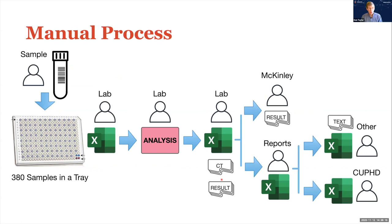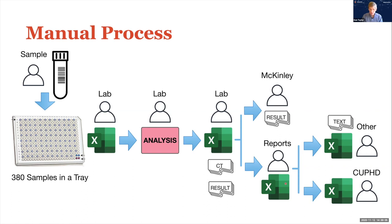Here is a very oversimplified diagram of the process: you go from collecting the samples, organizing them in a tray, creating an Excel file that feeds the analysis machine — telling it which samples belong where. That machine generates another Excel spreadsheet with two sheets: one containing gene values and another containing results. We're already seeing a problem with data being divided into different groups and would like to bring these results together. We also have to send results to McKinley, and there are a lot of downstream reports — how many positives today, how many on campus, how many off campus — plus coordination with the Champaign-Urbana public health district.